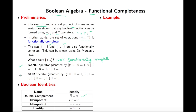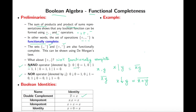Now let's introduce two new operators: NAND and NOR. The NAND operator means you take the AND of x and y and then take the complement. So x NAND y equals (x times y)-complement. Similarly, NOR: x NOR y equals (x plus y)-complement. For NAND: 0 NAND 0 = 1, 0 NAND 1 = 1, 1 NAND 0 = 1, 1 NAND 1 = 0.